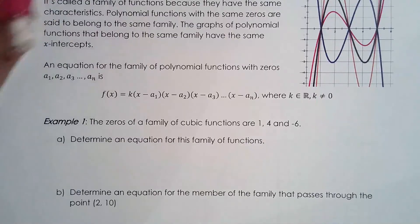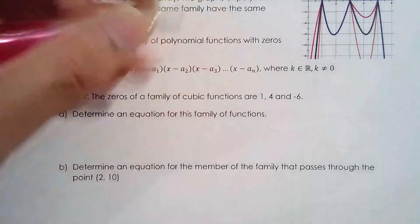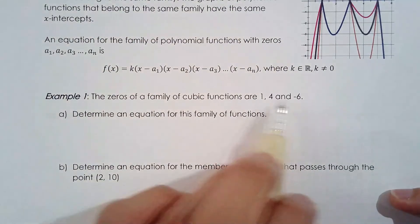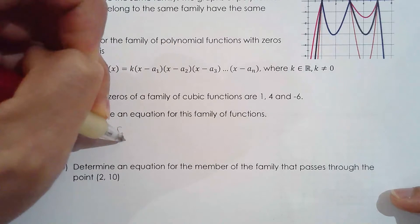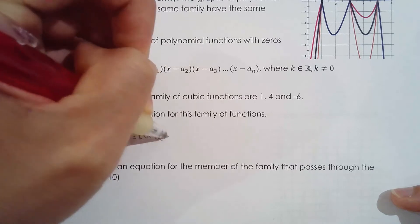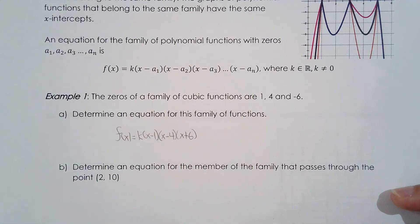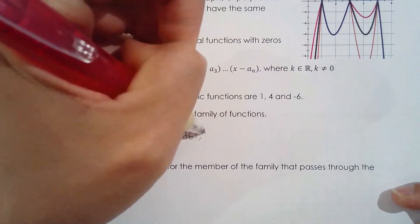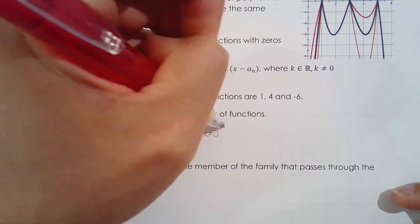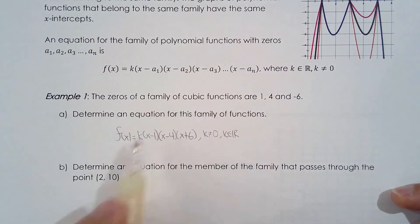Okay so let's just practice by writing the equation for a family of polynomial functions. So the zeros are one, four, negative six. I didn't indicate the order which means that the order is implied to be one. So f of x equals we'll use k, x minus one, x minus four, x plus six. Some students like to use a because that's what we use in the first chapter so it's up to you. And we say k can't be zero and k is a real number. All right so this represents a family of polynomial functions, specifically a family of cubic functions.